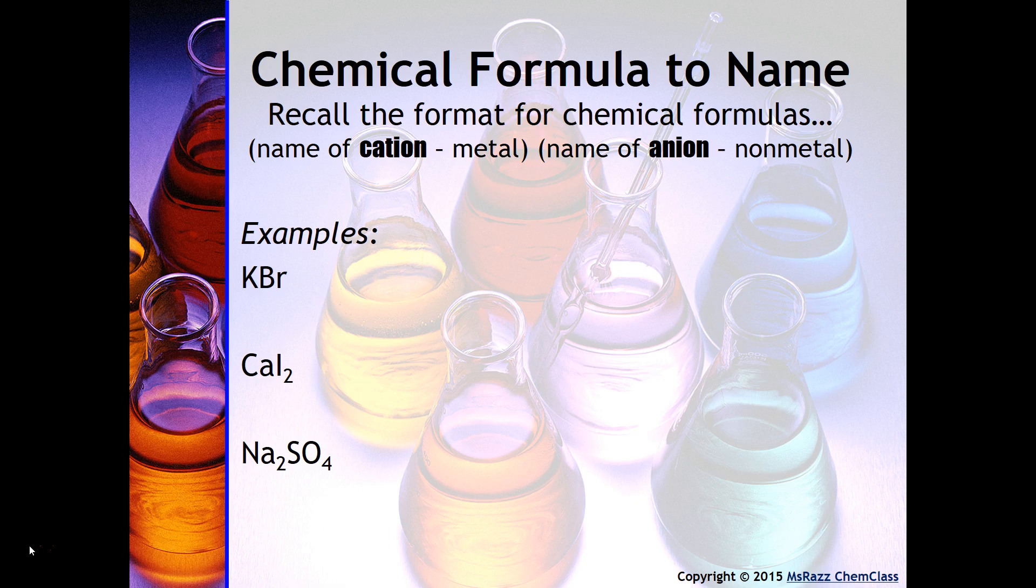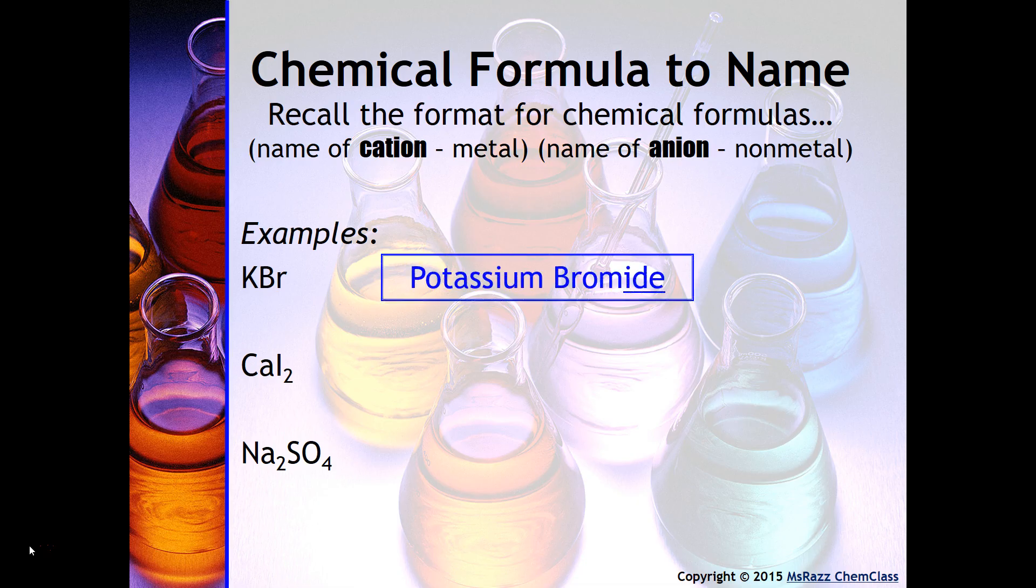Here are some examples. Now it's important to note that you always have to write the name of the cation first and the name of the anion second. Remember, it's always metal first, nonmetal second. So if you look at something like KBr, you're going to look at it just as is and name it exactly how you see it. For example, you would call this potassium bromide.